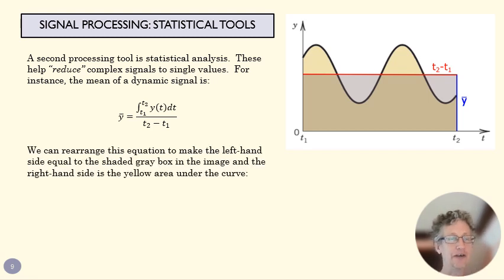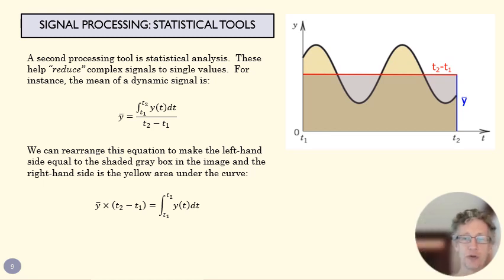If we rearrange that equation, y bar, our mean value, times the distance of time that we've been taking data gives us that shaded rectangle. That shaded rectangle is the same as the area of the integral. The usefulness of this is it tells us what's our average data point, where's the middle of our curve. It's kind of obvious when you look at this curve.